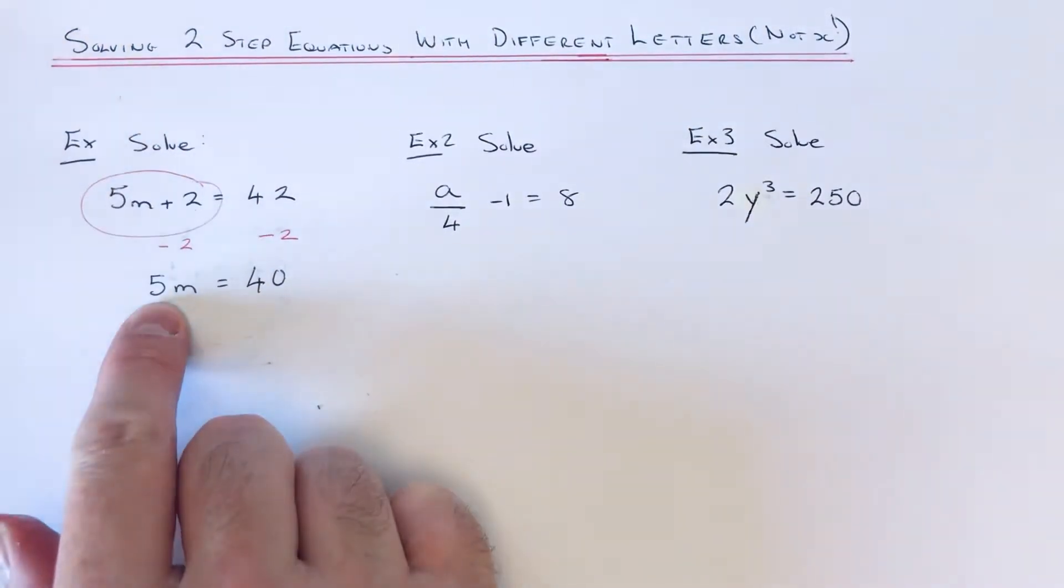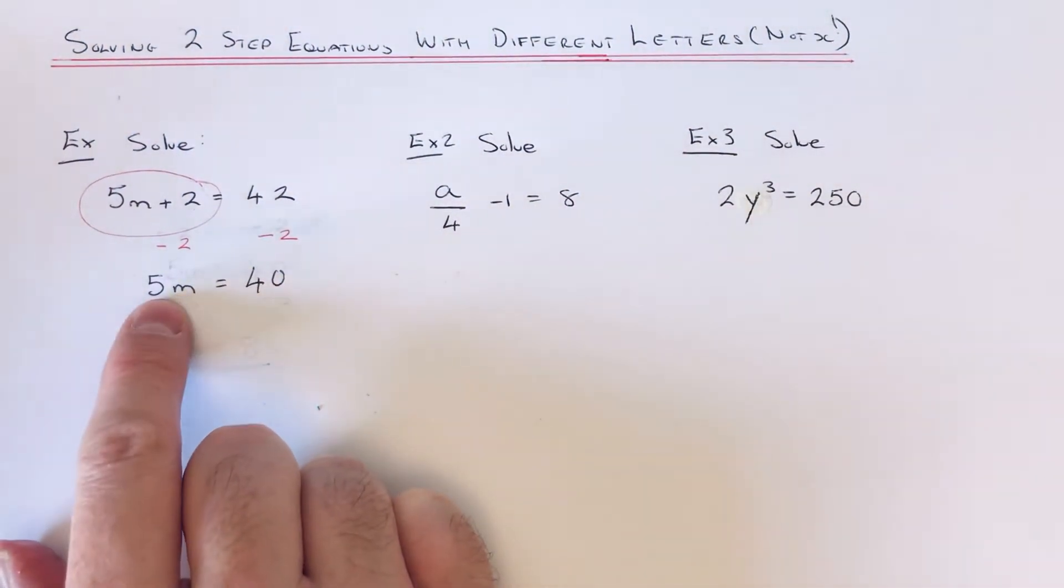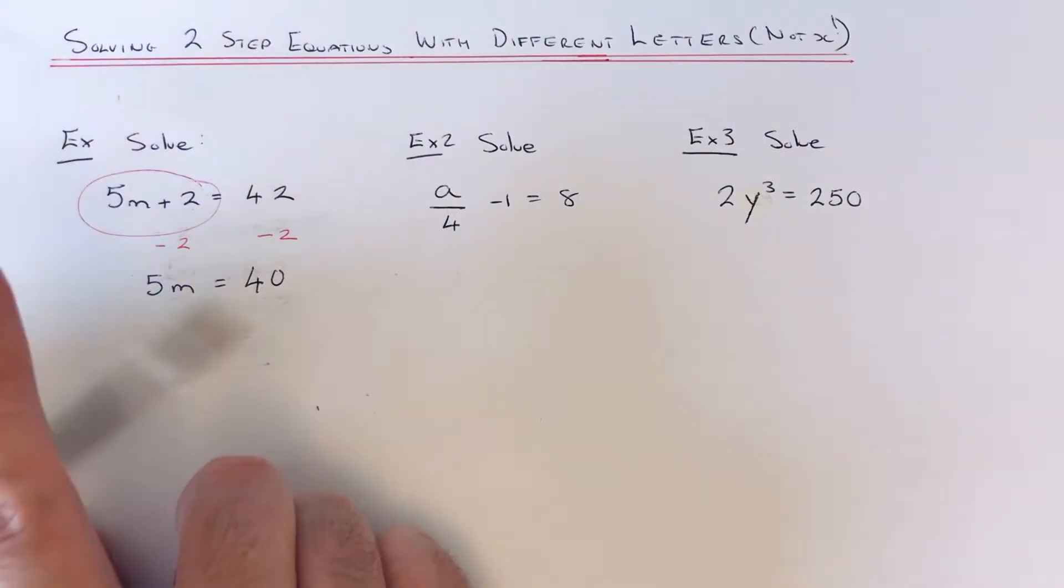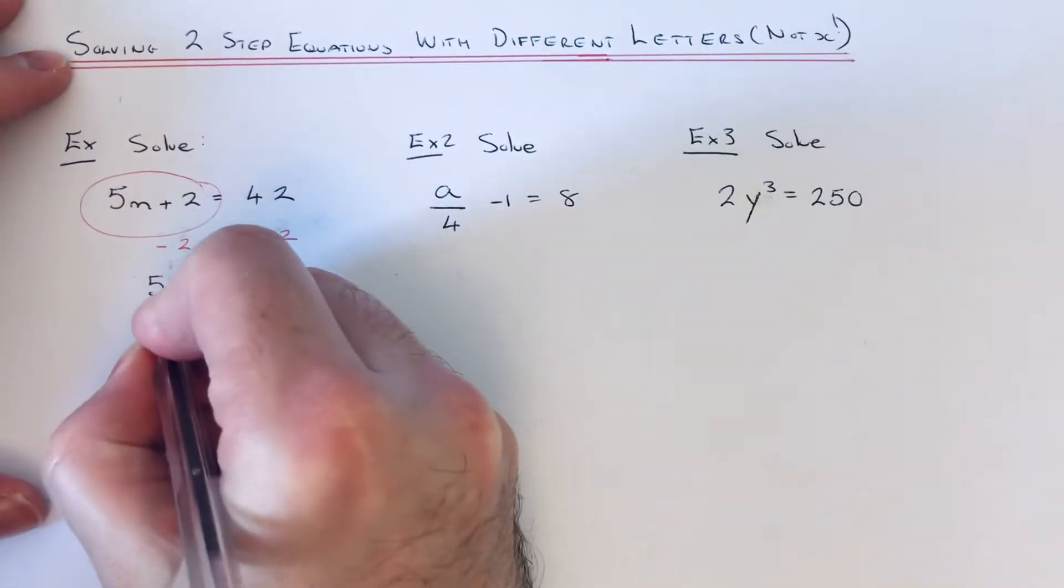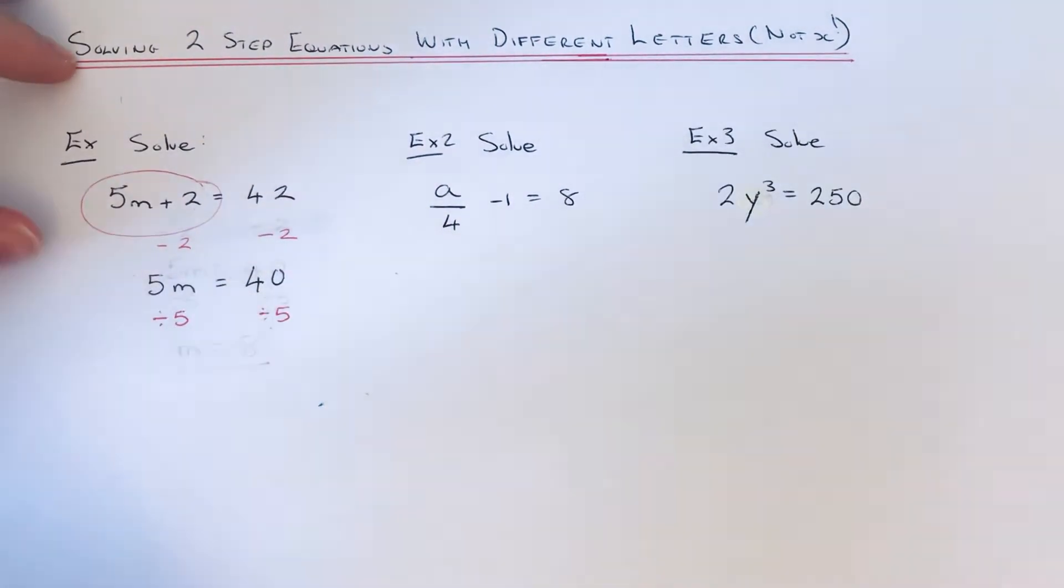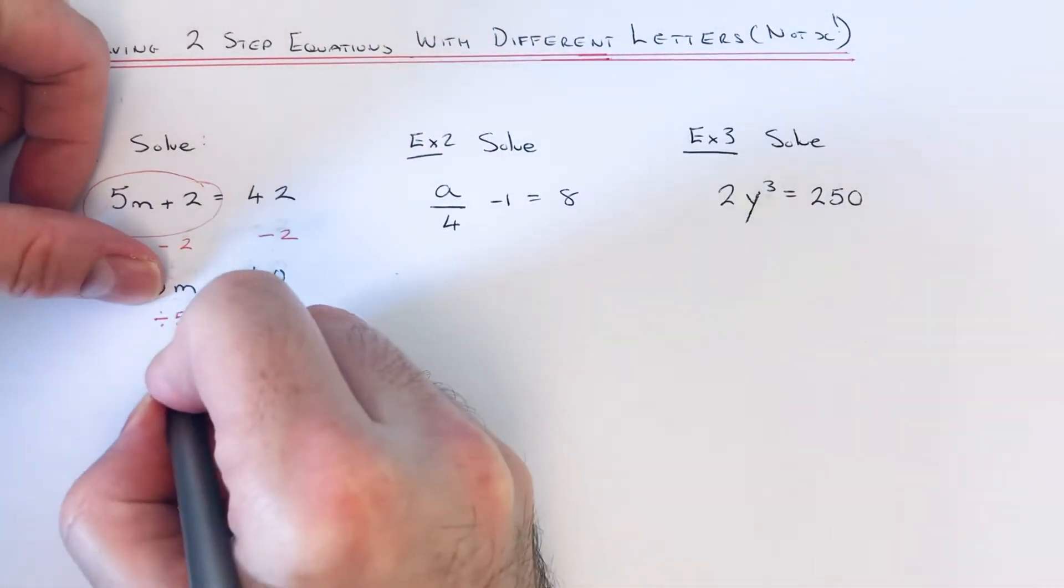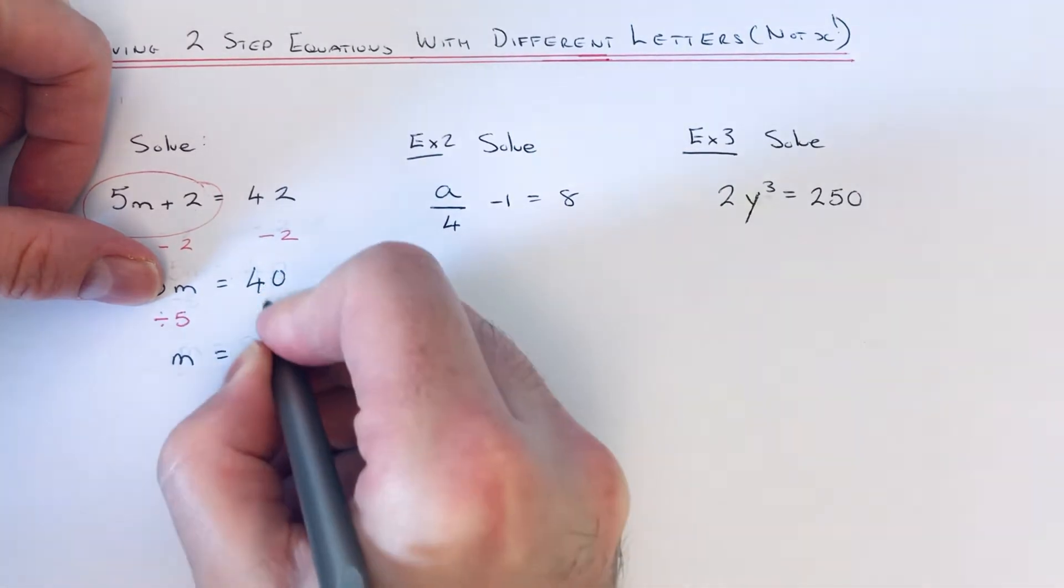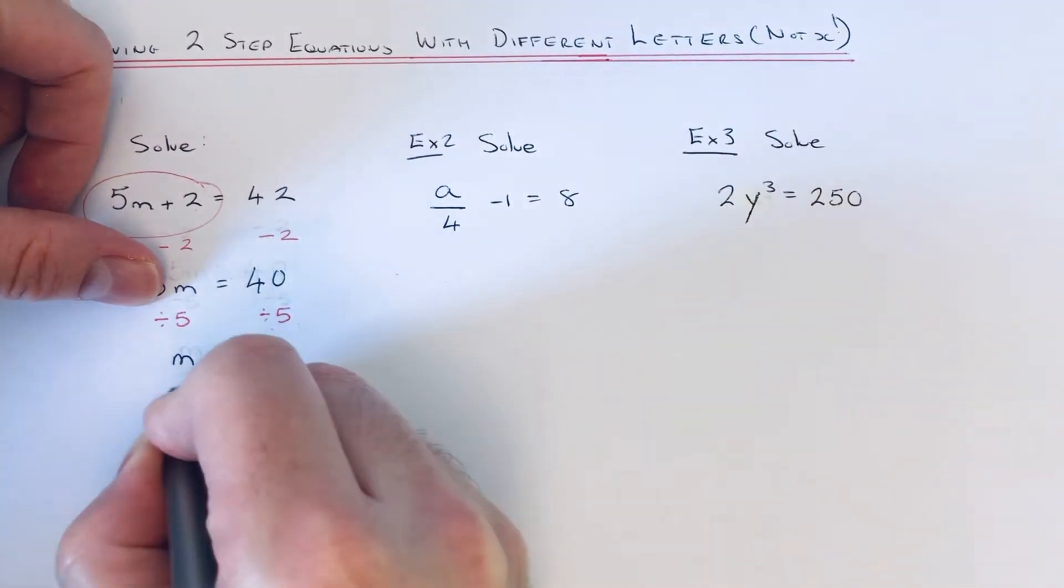42 take away 2 is 40. So we now need to just get rid of that 5. So m is being multiplied by 5. So the opposite to that is to divide by 5. So again, that will cancel out the 5 on the left and leave you with m.